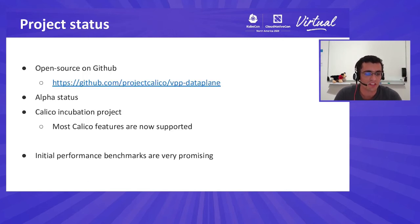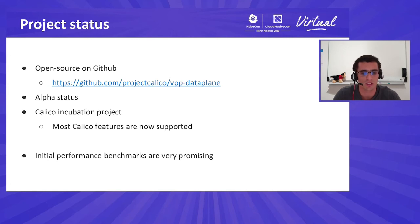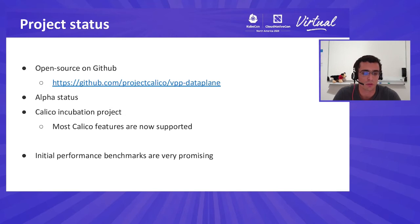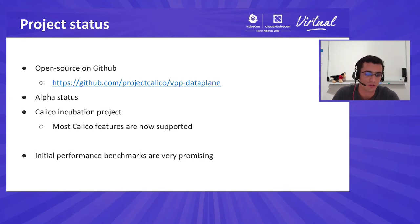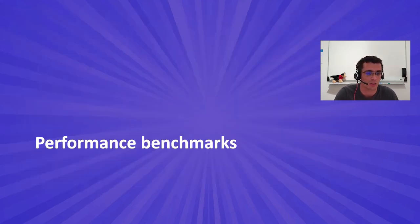This is how Calico VPP works. In terms of product status, it is of course open source on GitHub in the Project Calico organization, currently under alpha status and considered a Calico incubation project. As of today we support most Calico features; the features not yet supported include host policies and some specific configuration features related to BGP. We have started running initial performance benchmarks, and as you will see the results are quite promising.